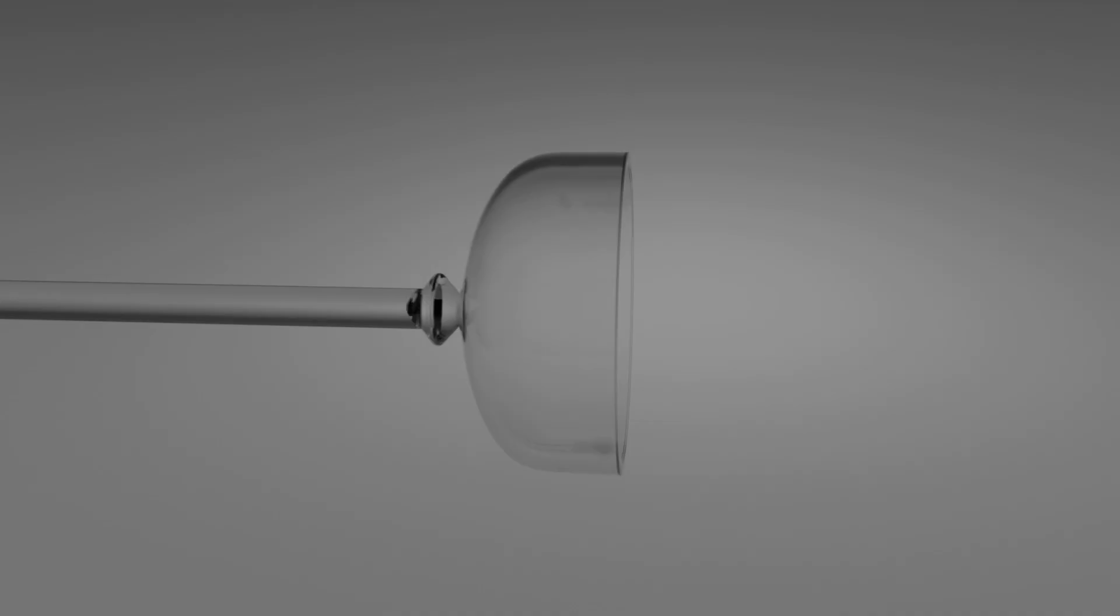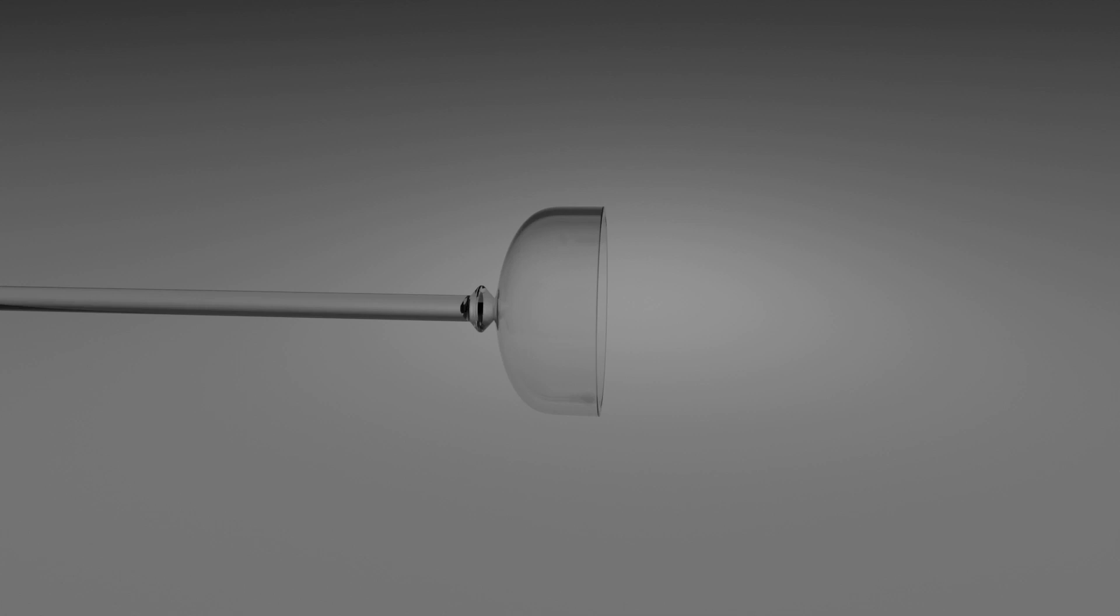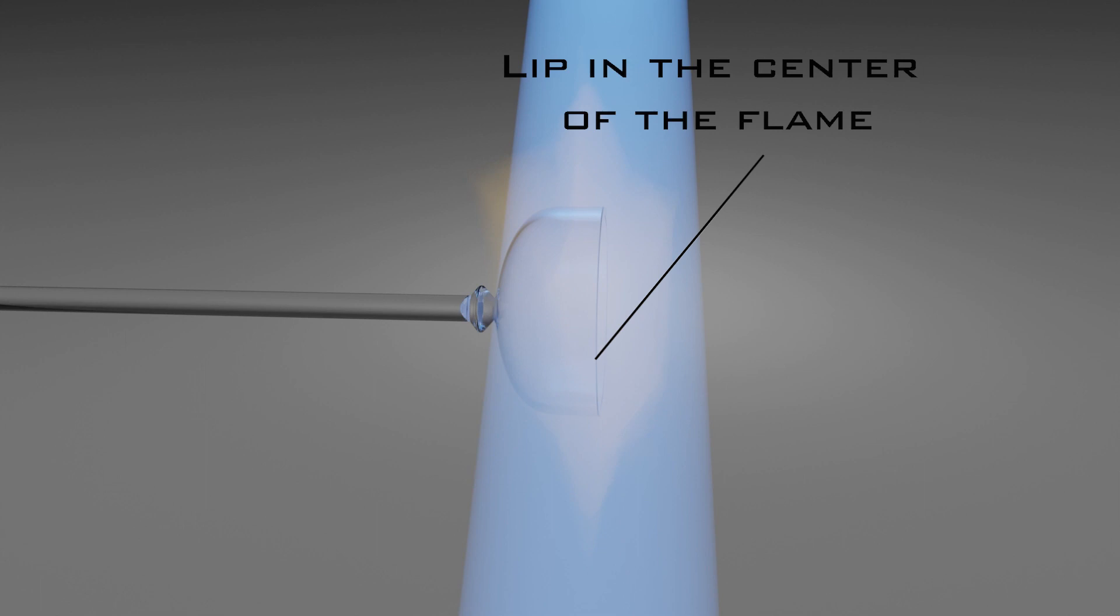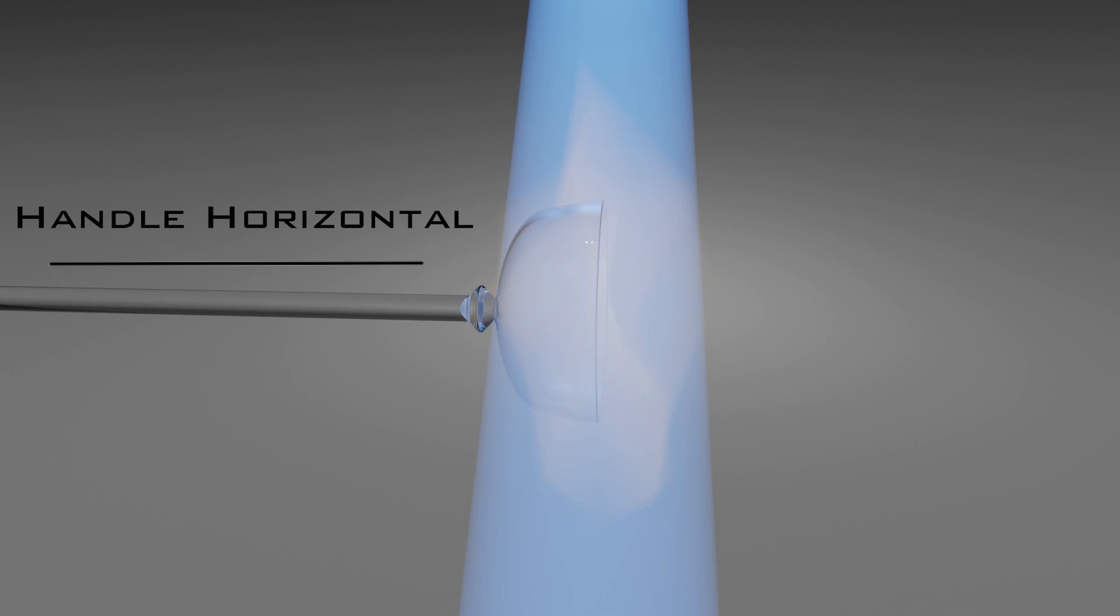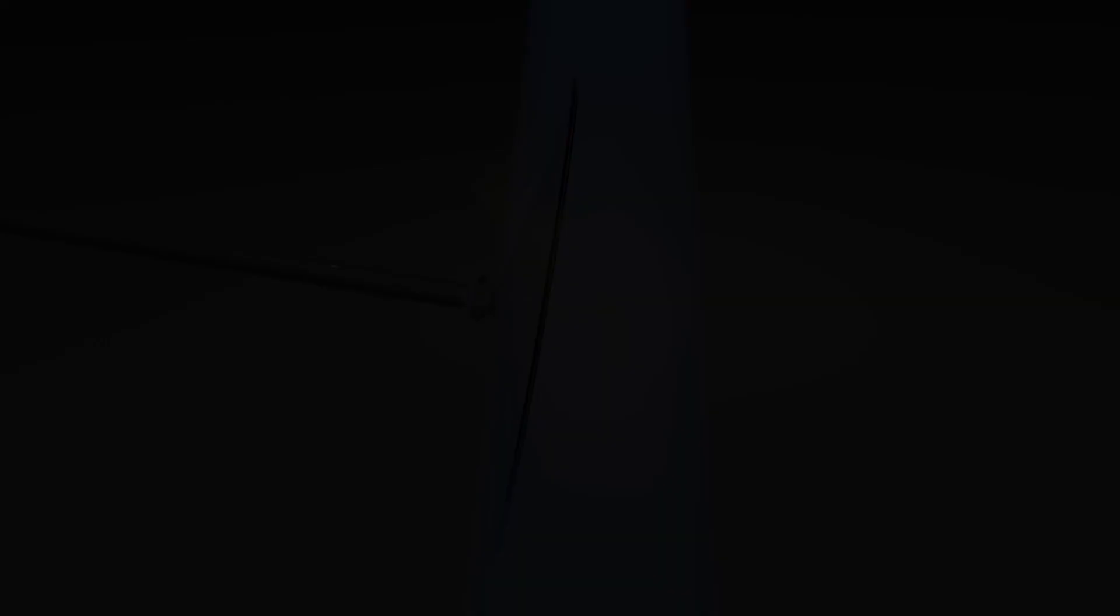And now the fun begins. There are two secrets to making this work every time. One, always keep the lip in the center of the flame. The lip has to move the farthest, so it has to be the hottest. Two, keep your handle perfectly horizontal until the very end. This optimizes the force of gravity to help you achieve a perfectly flat foot. If you lift up your handle while flaring so that the foot hangs down, you'll tend to get more of a cone or a hyperbolic shape. You don't want this until the end.